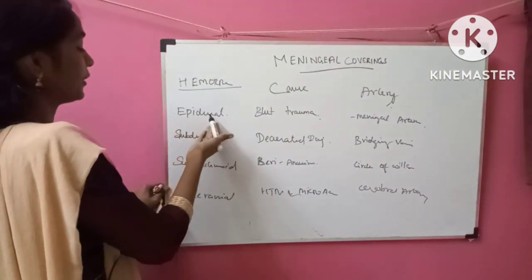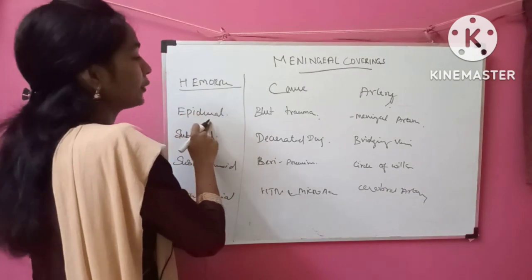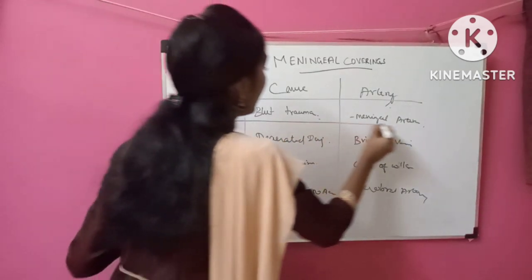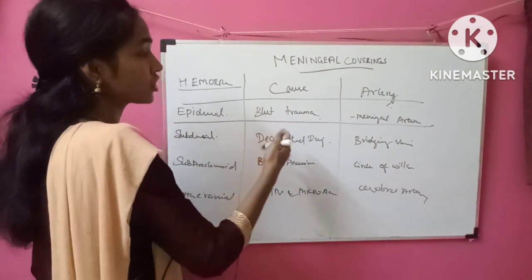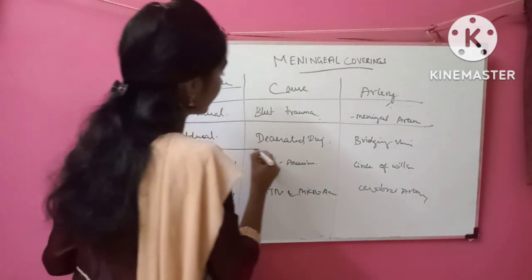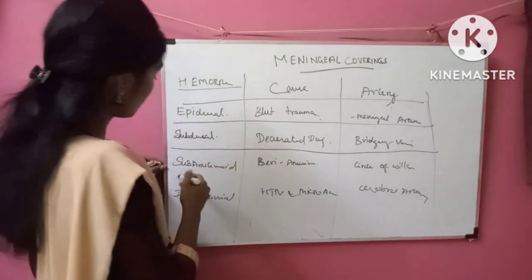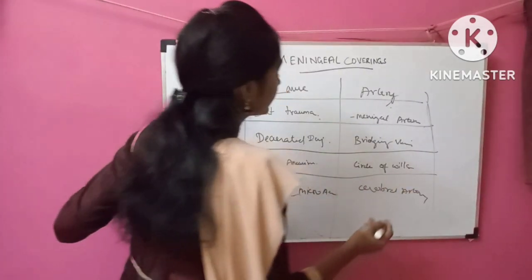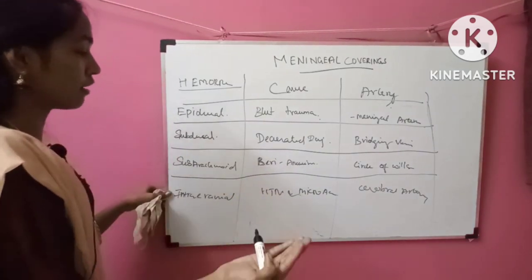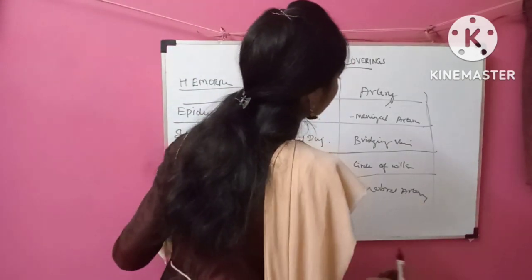To summarize: epidural hemorrhage is caused by blunt trauma — artery involved is the meningeal artery. Subdural hemorrhage is caused by decelerated injury — artery involved is the bridging veins. Subarachnoid hemorrhage is caused by a berry aneurysm present in the circle of Willis. Intracranial hemorrhage is caused by microaneurysm rupture due to hypertension — artery involved is the cerebral arteries.